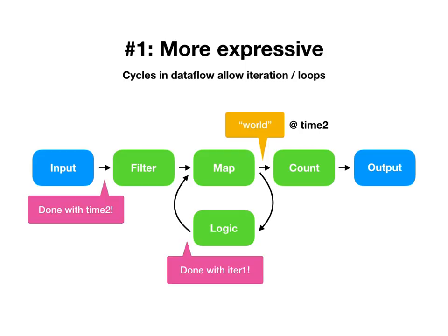Logic then says 'I'm now done with iteration two — we should move along.' The map operator acts on that, takes its data — it may produce no output data, maybe we ran out of string. So it tells logic that we should move along, and logic says 'we're done with iteration three.' Map operator does nothing, logic says 'I'm done with iteration four'...